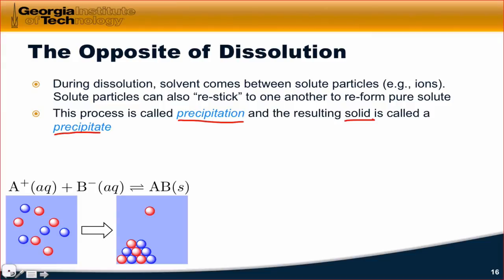An example of a precipitation reaction is shown for you at the bottom of this slide. So initially we have aqueous A+ and B- ions which are represented as the blue and red spheres on the left. Precipitation occurs as the ions start finding each other and forming a solid mass at the bottom of the reaction system. This solid mass is what we call the precipitate.